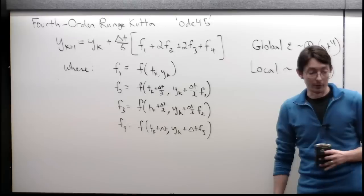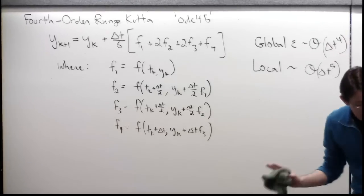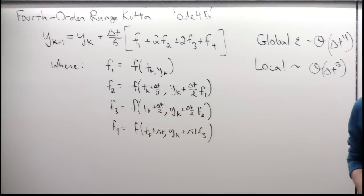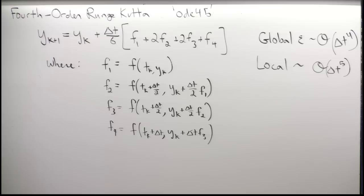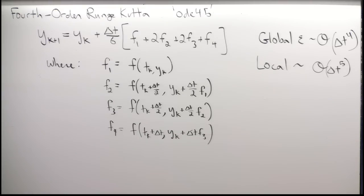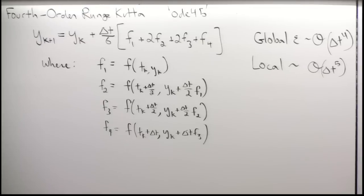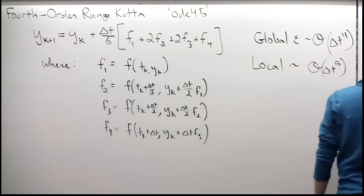Think about that compared to forward Euler. If I needed an error on the order of 10⁻⁴, in forward Euler I would need a tiny time step like 0.0001. For Runge-Kutta I can take a time step of 0.1 — so many fewer integration steps that even though it's a little more expensive per time step, overall for the same accuracy this is just the clear winner. This is why this integration scheme is the built-in favorite in MATLAB.